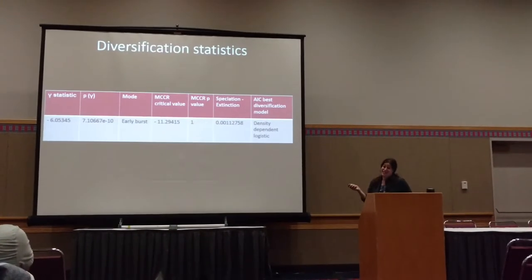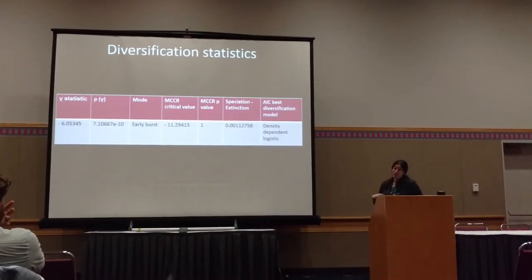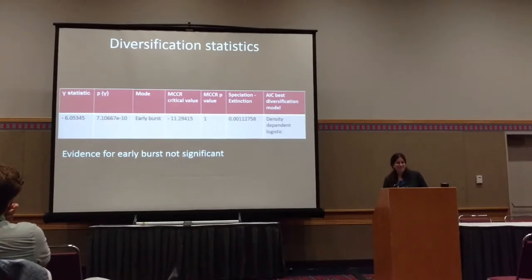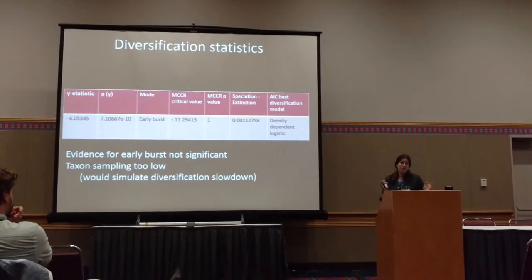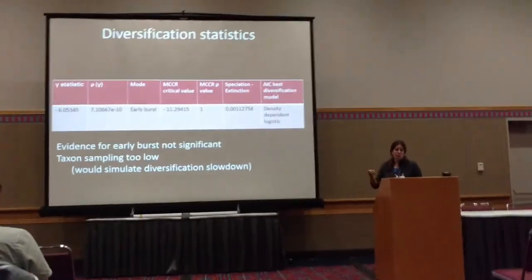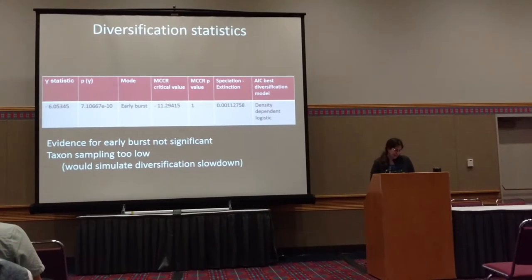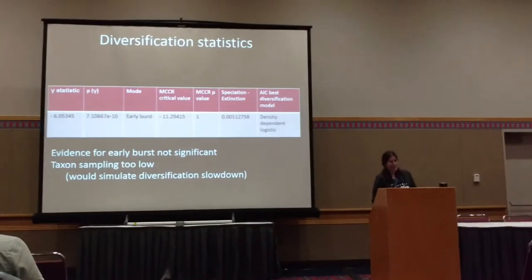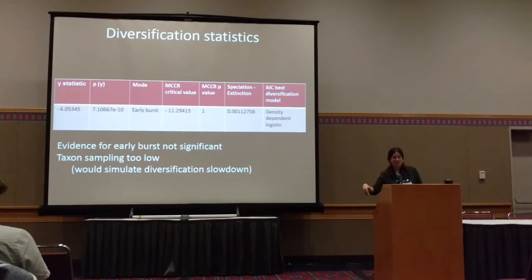I put in a huge estimate of 30,000 taxa — probably way fewer than there actually are — and it turned out to be actually really insignificant. So we really don't have statistical support for an early burst or any diversification fit model, even though it visually looks like it in the phylogeny. Any more recent speciation events are basically hidden because you don't have the taxa representing them, so it simulates a slowdown. This is sort of the first attempt to do this with bacteria.